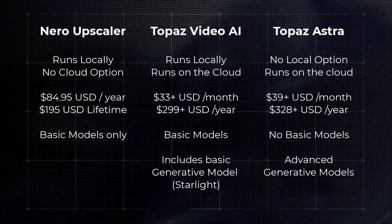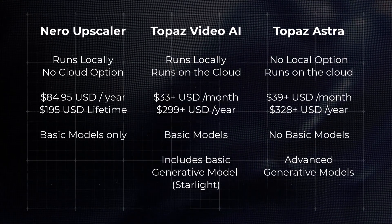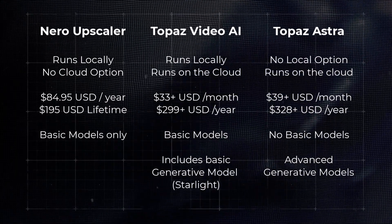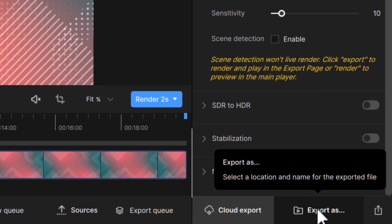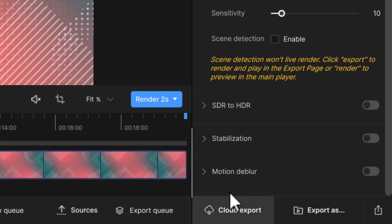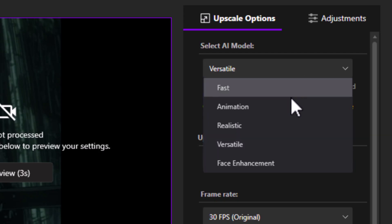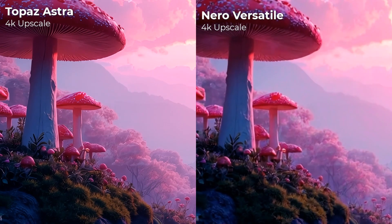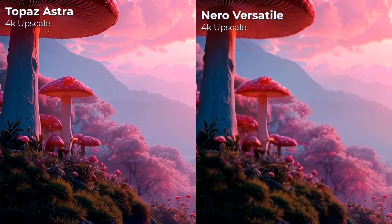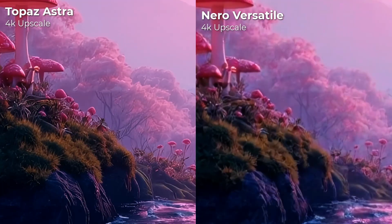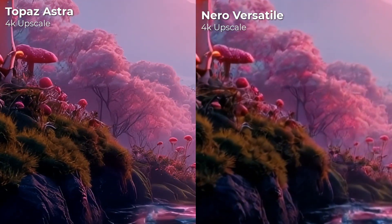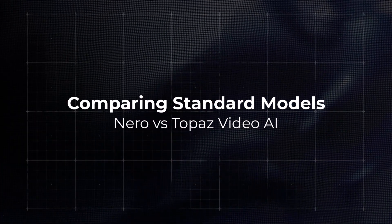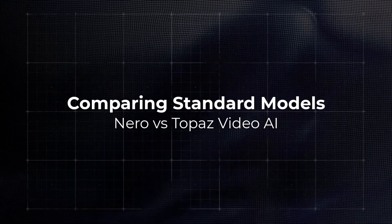Nero and Topaz Astra are basically two completely different ends of the spectrum when it comes to video upscaling. Topaz Video AI does have Starlight, which is a generative upscaler, and also has the option to process locally or on the cloud. Because Nero doesn't have a generative upscaler, that is one area where it simply cannot compete with Topaz Video AI or especially Topaz Astra — it can't get that regenerated level of detail, especially when converting an AI video into an upscaled video.